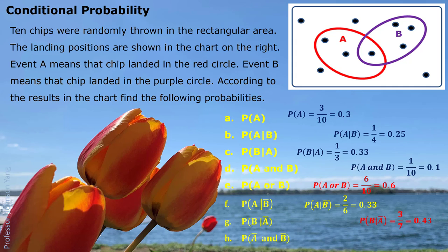Part H: P(Ā and B̄). It asks how much chance the chip is not in the red circle and not in the purple circle — not in any circle. We can see directly that 4 chips are outside both circles. We have no condition, so we consider all 10 chips total, and 4 of them are outside. So P(Ā and B̄) is 4 out of 10, which is 0.4 or 40%. Hope you understand probability and conditional probability from this typical example. It's very important to understand the logic. See you next time.